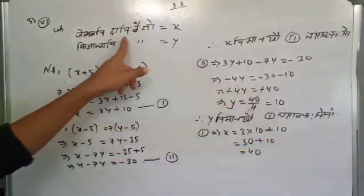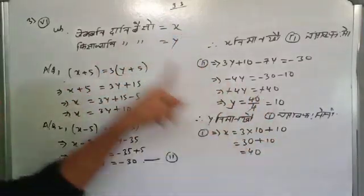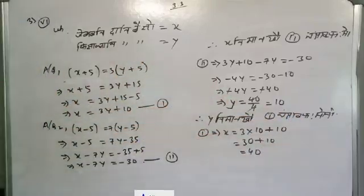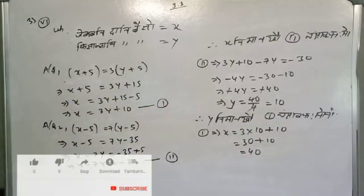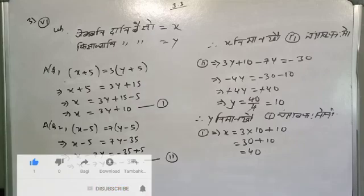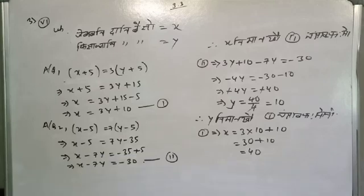That's the answer: x is equal to 40 and y is equal to 10. Look over the videos. If you have 2.4 you can see 1.5. So bye bye.